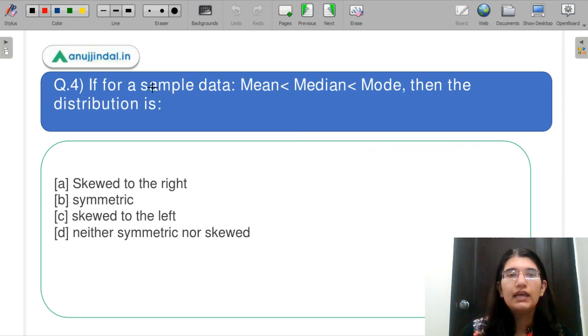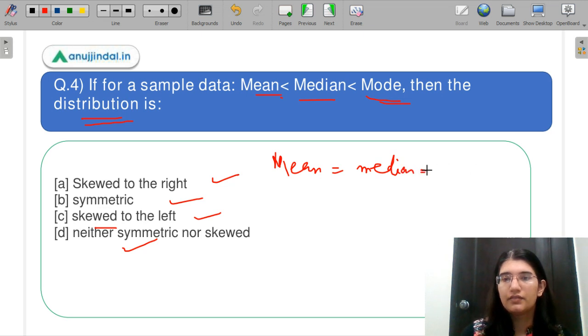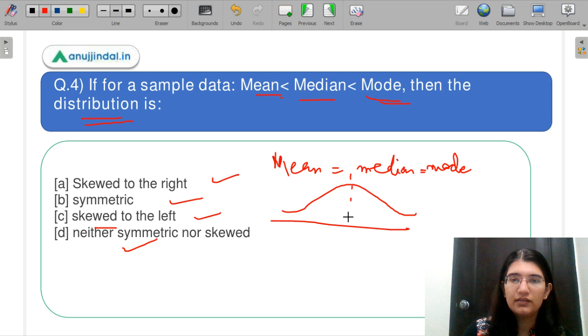Let us move on forward. If for a sample mean is smallest and median is greater than this and mode is the greatest, aapki jo skewness hai, uske baare mein aapko batana hai. Skewed to the right, it is symmetric, skewed to the left, and B part is neither symmetric nor skewed. Aapko yahan pe skewness batani hai. Also for a hint, agar mean equal to median equal to mode hota hai, toh waha pe skewness jo hoti hai, that is zero. So your model is completely symmetric. So you can actually remove B part. Okay. And when there is inequality, tab waha pe pakka hi skewness hai.